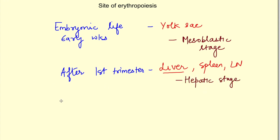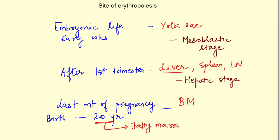During last month of gestation and after birth up to 20 years of age, site of erythropoiesis shifts to bone marrow of all the bones of the body. After 20 years, marrow of long bones becomes fatty and inactive except upper part of humerus and femur bones.